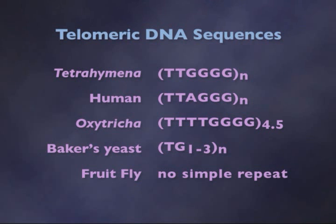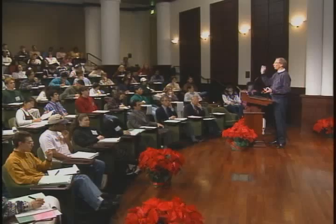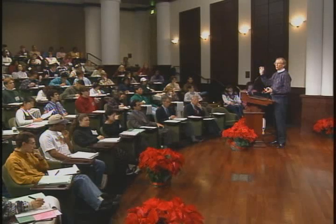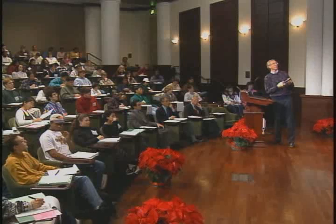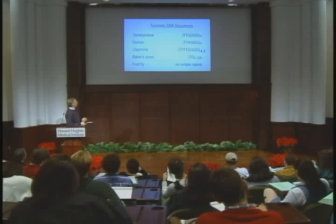So we have a phenomenon here that's extremely widespread in biology for organisms that have linear chromosomes — the eukaryotic organisms. Bacteria don't have to worry about telomeres; they have circular chromosomes. If you have a circle, that's a nice way of not having to worry about ends. But those organisms that have linear chromosomes with ends typically have this sort of repeated sequence at the end.